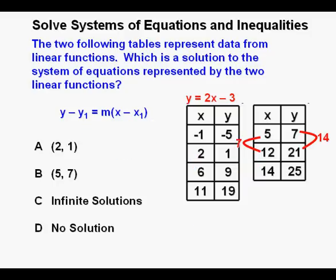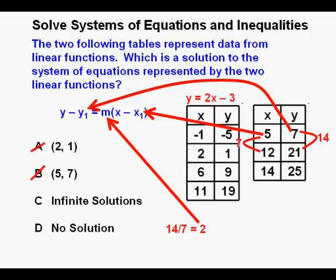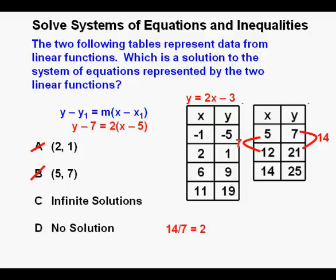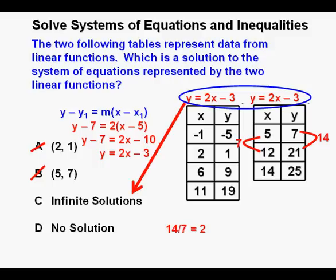For the second equation we do the same thing. On the left side we have 12 minus 5 equals 7, and on the right side 21 minus 7 equals 14, so our rise over run is 14 over 7 which also equals 2. Since the slope is 2, the same as the first equation, we know that answers A and B are not possible so we cross them off. Using the point (5, 7) in point-slope form gives y minus 7 equals 2 times (x minus 5), which simplifies to y equals 2x minus 3. Since both tables have data from the same linear function, there are an infinite number of solutions, so we circle our correct answer C.